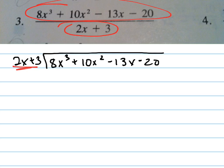So what I'm going to do is divide these two numbers and put that number up here. 8x cubed divided by 2x is 4x squared.